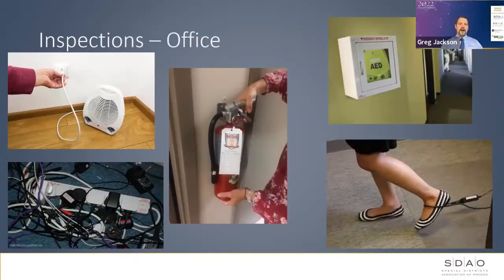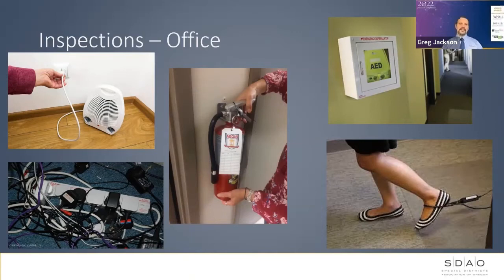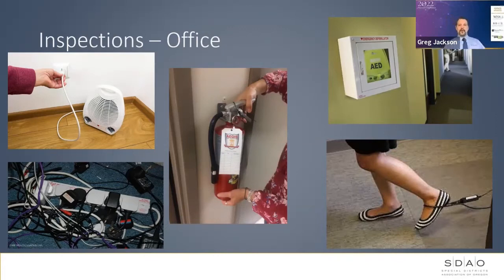If you're using portable heaters or allowing staff to use them, make sure those portable heaters are equipped with the automatic shut-off if they get tipped over. Try not to have them near any flammable material. If you're using an extension cord, that should be temporary use only. Don't piggyback one surge protector into another, because this could overload your circuits and create an electrical hazard.